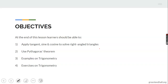Trigonometry is about triangles — particularly right angle triangles. These are the objectives I expect you to know: apply tangent, cosine, and sine to solve right angle triangles; use the Pythagoras theorem; work through examples on trigonometry; and complete exercises. These are the four objectives I expect you to know before the end of this class.